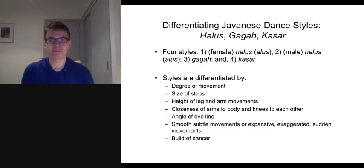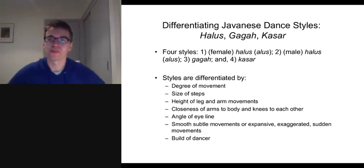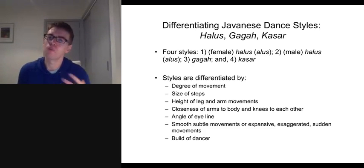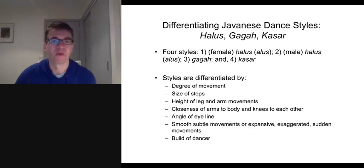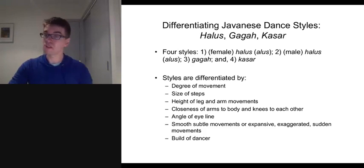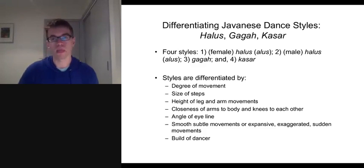The build of a dancer is incredibly important when it comes to differentiating dance aesthetics and performance styles. For example, someone with quite broad shoulders would not really perform an Alus style. In contrast, someone who might be a lot thinner, perhaps with a longer neck — that type of male dancer would be more suited to performing the Alus style.